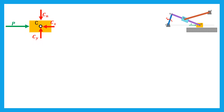Let's start with the slider in C. A slider is considered as a particle; thus two equilibrium equations can be written. The equilibrium along the horizontal direction gives P minus CX equals zero, or simply CX equals P — this is the first equation. Similarly, the equilibrium along the vertical direction gives CY minus CN equals zero — this is the second equation.